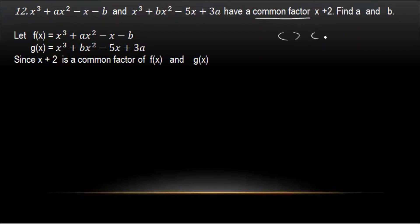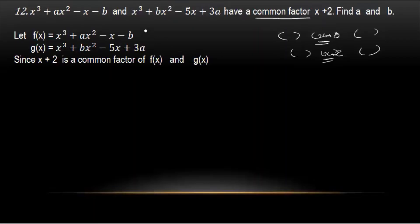If you get 0, that's 2. So x plus 2. x plus 2 is a common factor of f of x and g of x.